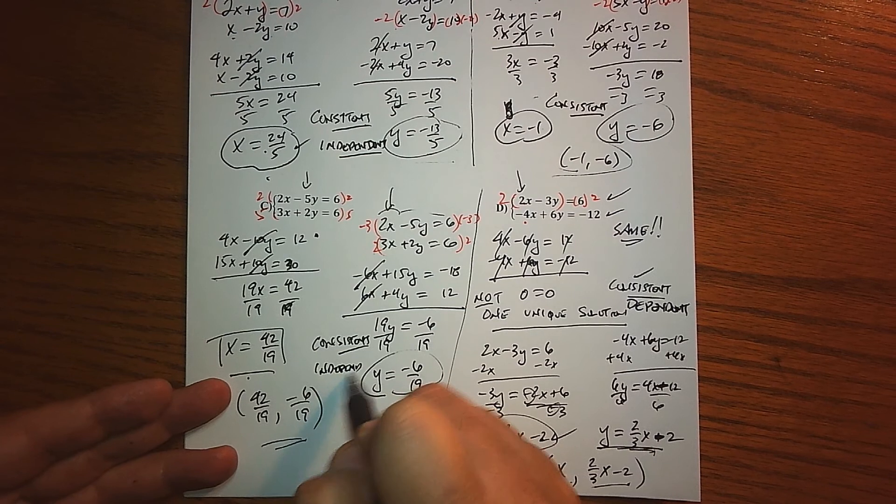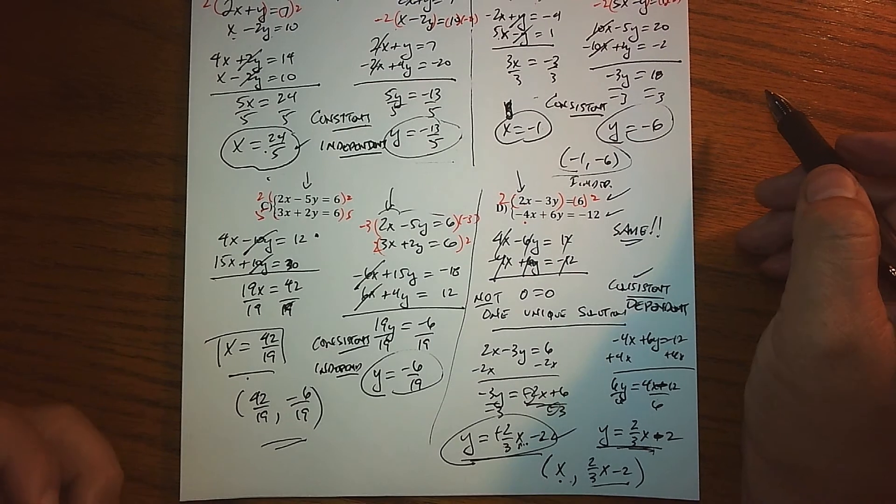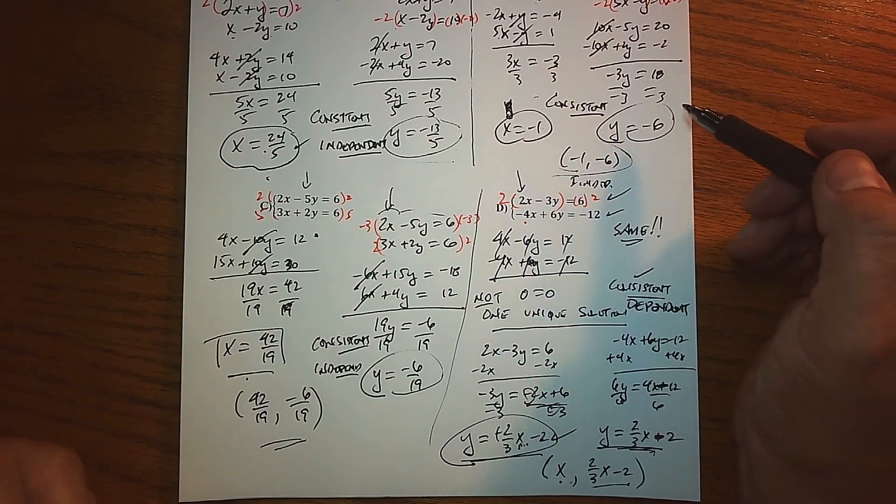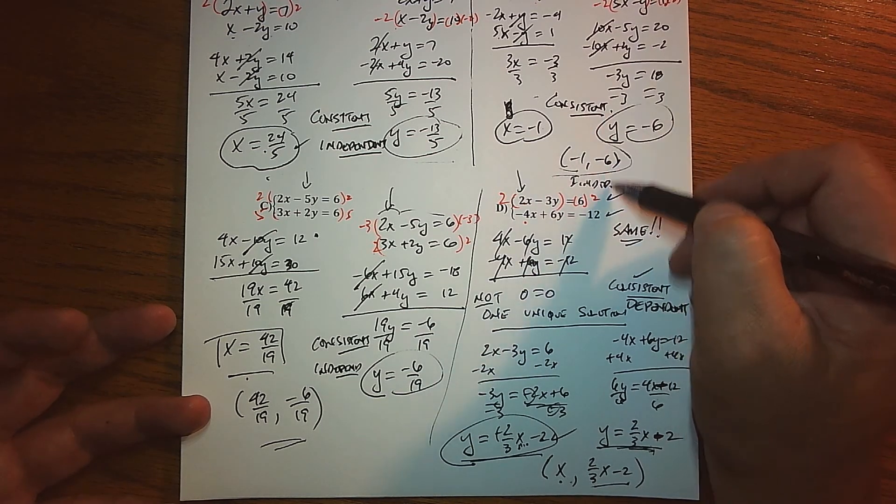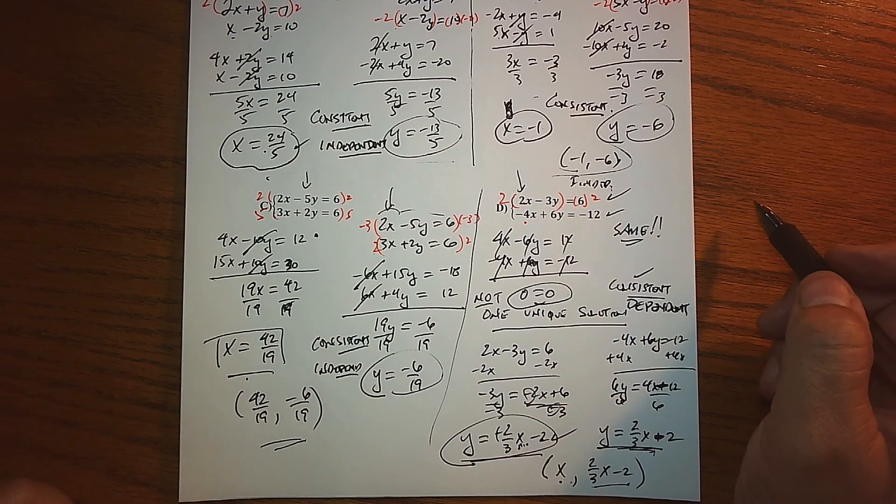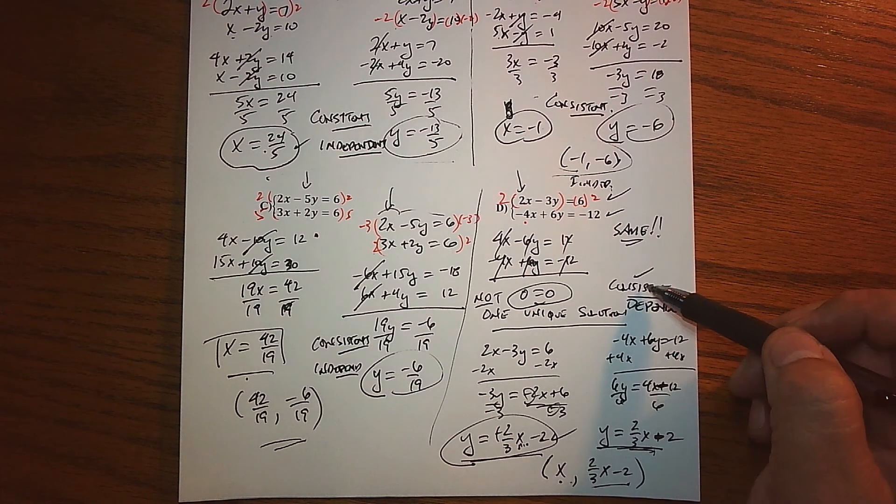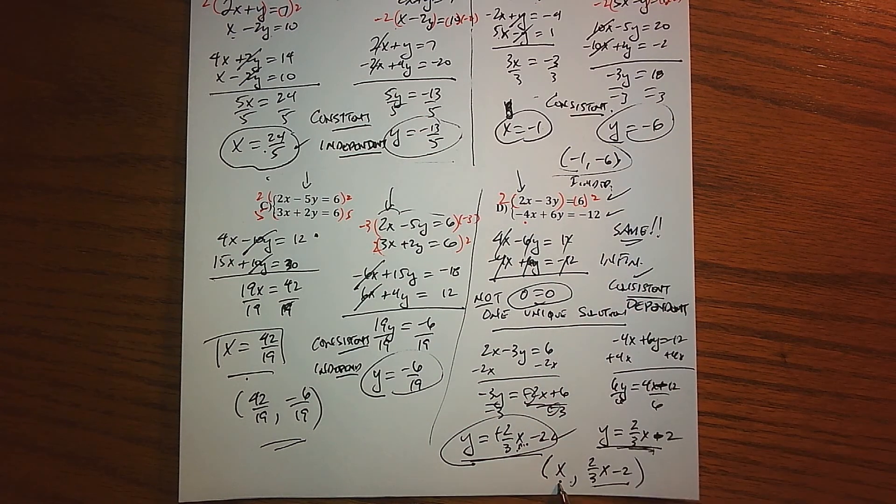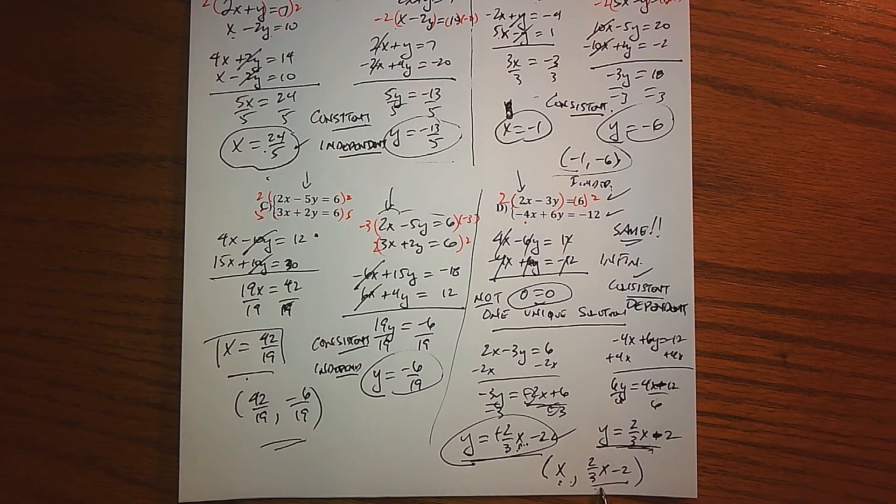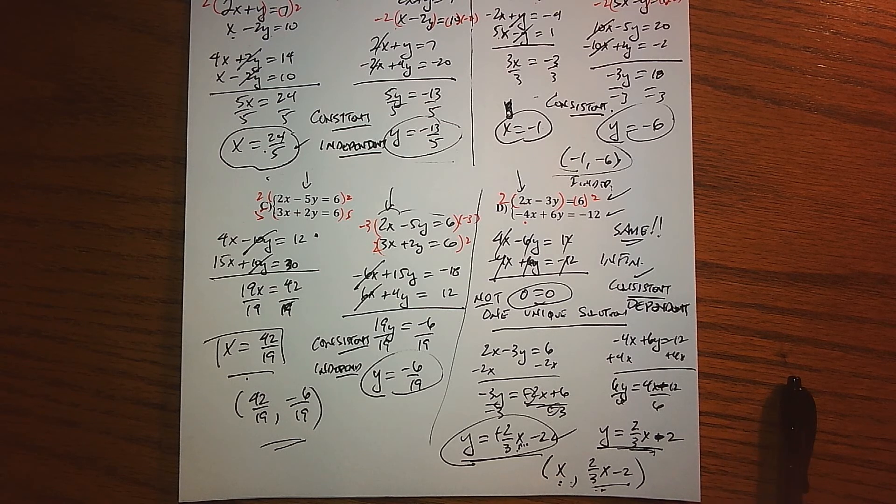These systems are consistent but they are independent. Most of the things that we've solved have been independent because the value for X and Y do not depend on one or the other—they're independent of each other. Some systems, when you have a thing that's always true, are what we call a dependent system, meaning it does have a solution but there's actually an infinite number of them because you just let X be any number, plug it in here, you have the corresponding Y.